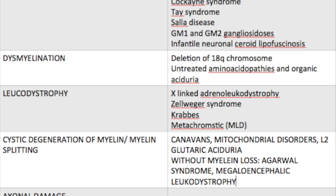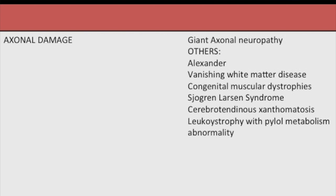Cystic degeneration of myelin, or myelin splitting, can occur with or without myelin loss. Myelin loss is seen in Canavan's disease, mitochondrial disorders, and L2-hydroxyglutaric aciduria. Without myelin loss, cystic degeneration can happen in Aicardi-Goutières syndrome, van der Knaap disease, or megalencephalic leukoencephalopathy with subcortical cysts. Axonal damage is associated with giant axonal neuropathy. Several unclassified conditions remain, including Alexander disease, vanishing white matter disease, congenital muscular dystrophies with five subtypes, Sjögren-Larsson syndrome, cerebrotendinous xanthomatosis, and leukodystrophy with pyruvate metabolism abnormality.